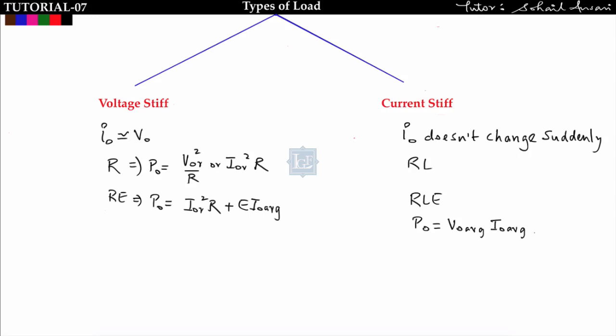In any power electronic circuit you will get two types of load. The first is voltage stiff type of load: the waveforms of i_naught and v_naught are similar — if v_naught has a certain shape, i_naught has the same shape with only a magnitude difference. Examples are R load and RE load. For R load, output power = I_rms² × R or V_rms² / R, using RMS values.